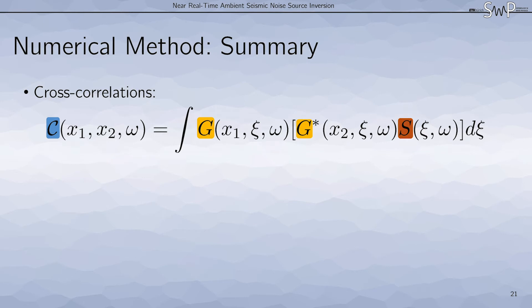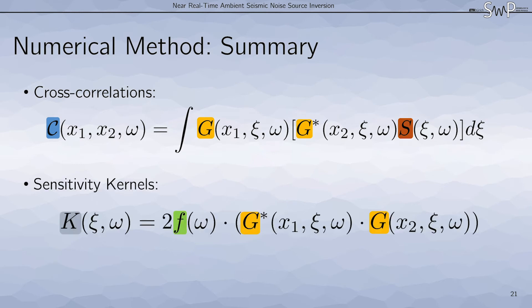To summarize, we use a cross correlation equation here to forward model cross correlations for any noise source distribution in any station location. And we then use the sensitivity kernel equation to obtain information about where we should increase or decrease the source strength. The main computational cost in these equations comes from computing the Green's functions G and modeling the power spectral density of the noise source distribution S. So how can we optimize this?